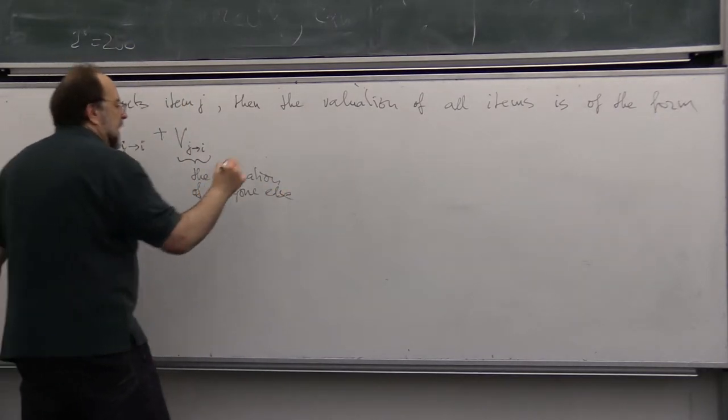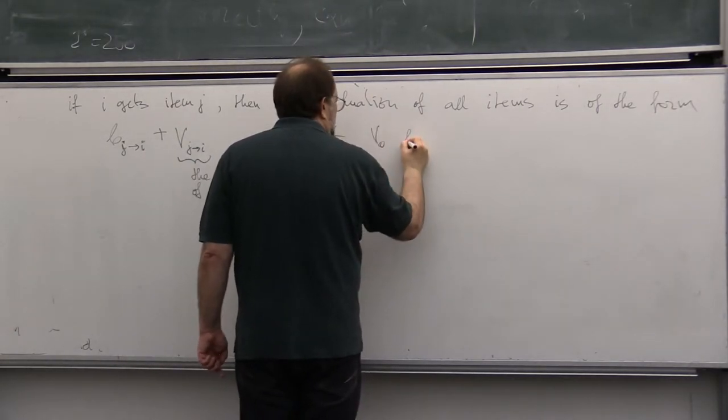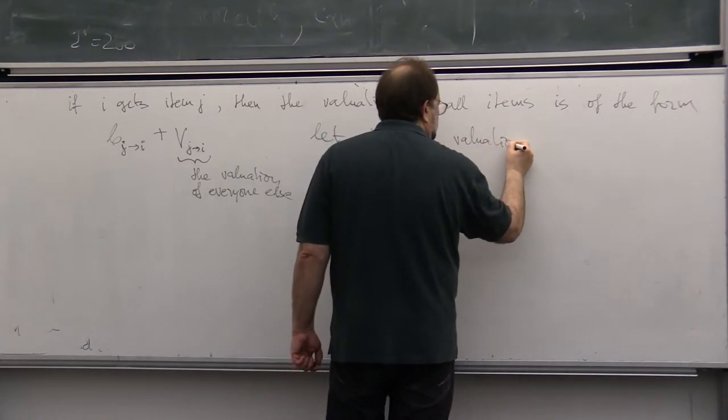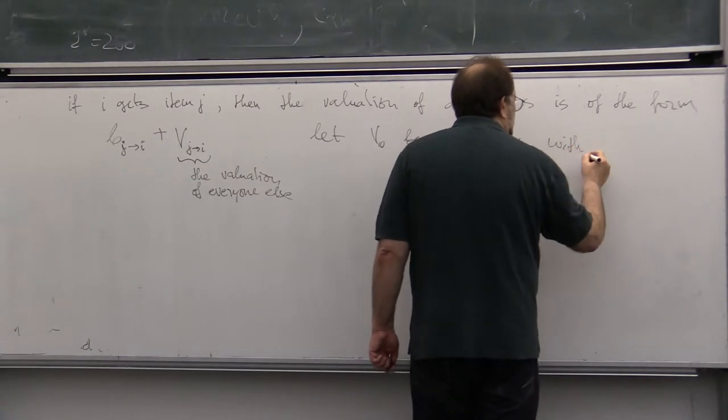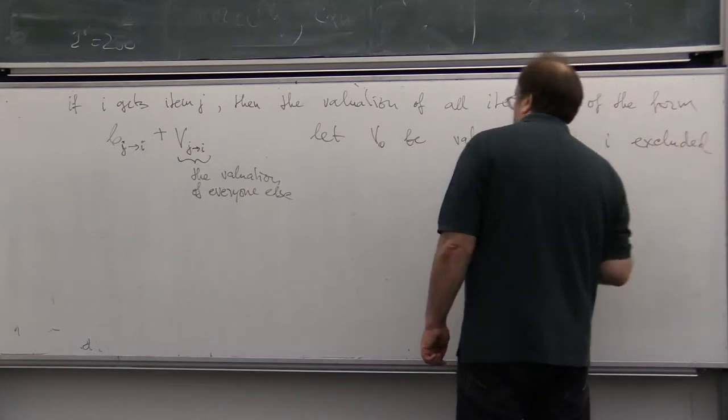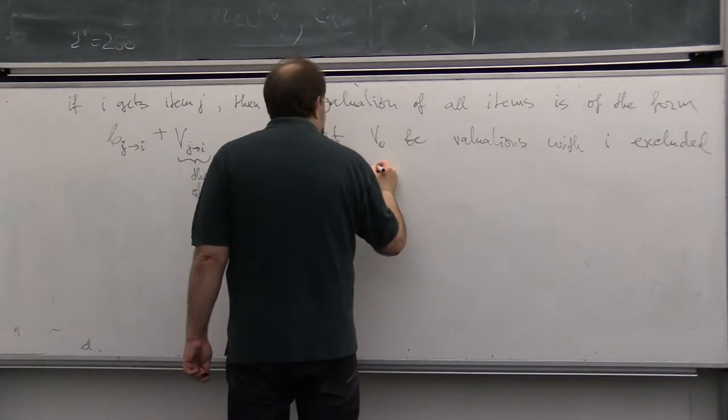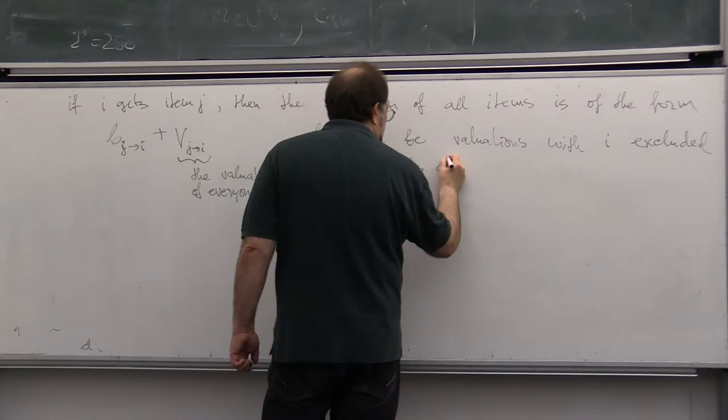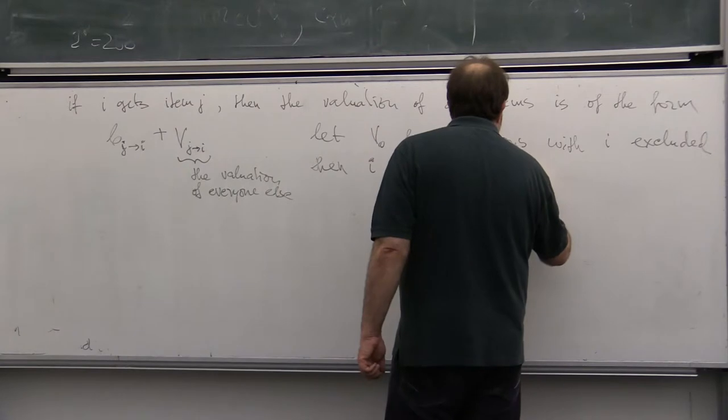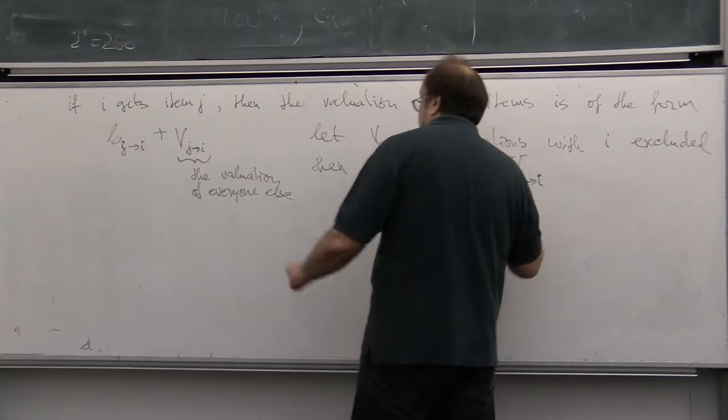And let V0 be valuations with I excluded. Then I gets charged V when item J goes to I. So this is the remaining portion.